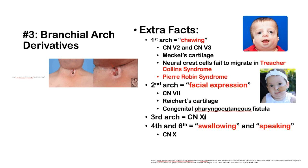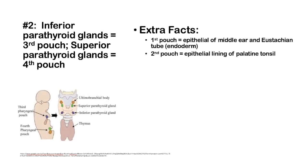The third arch involves cranial nerve 9. The fourth and sixth arches are responsible for swallowing and speaking via cranial nerve 10 (vagus nerve). The inferior parathyroid glands come from the third pharyngeal pouch and the superior parathyroid glands come from the fourth pouch — the third migrates down to the inferior position and the fourth stays up for the superior position. The first pouch forms the middle ear from endoderm, and the second pouch forms the palatine tonsil.